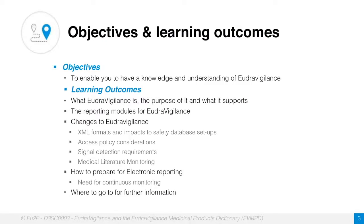This module will cover the workings of EudraVigilance. The objectives are to have knowledge and understanding of EudraVigilance. The learning outcomes for this module are: what is EudraVigilance, what is its purpose, what does it support, the reporting modules for EudraVigilance, current changes to the EudraVigilance system, how to prepare for electronic reporting, and where to go for further information.